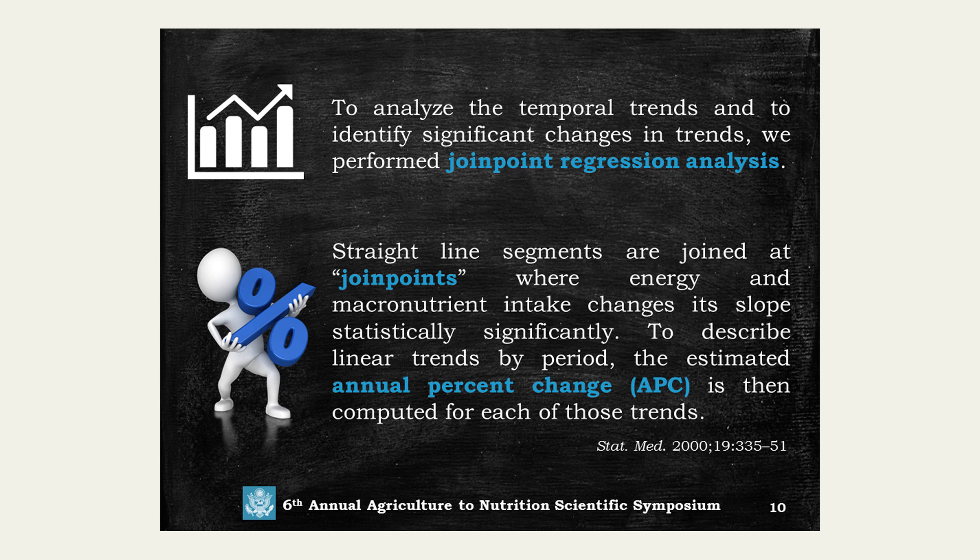In the joint point regression analysis, straight line segments are joined at points called joint points, where energy and macronutrient intake changes are statistically significant. To describe the linear trends by period, the Estimated Annual Percentage Change (APC) is calculated for each trend where there is a significant change in apparent dietary availability in the Nepalese diet.